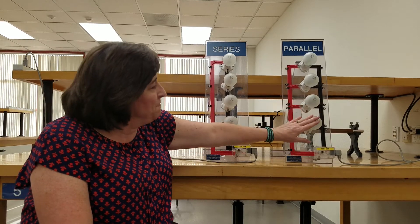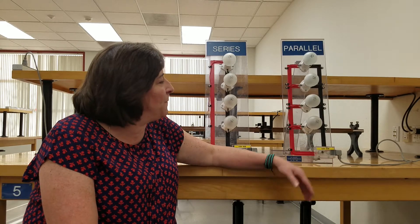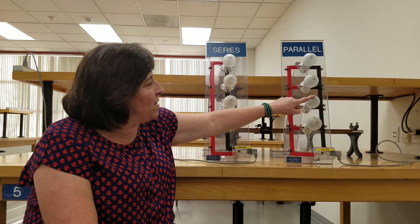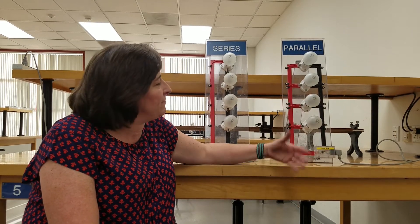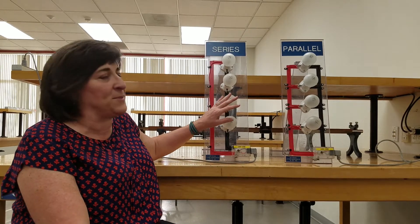But in parallel, the resistance is much lower: 1 over R plus 1 over R plus 1 over R plus 1 over R equals 1 over R-eq, and R-eq is much smaller than this one.